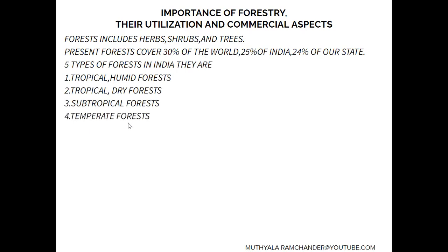temperate forest, and alpine forest. Tropical humid forest means these forests are continuously having rainy conditions with humid moisture conditions. Tropical dry forest also contains a rainy situation but with dry soil, so these are called tropical dry forest. Subtropical forest means it is a combination containing both humid and dry conditions in the tropical regions.